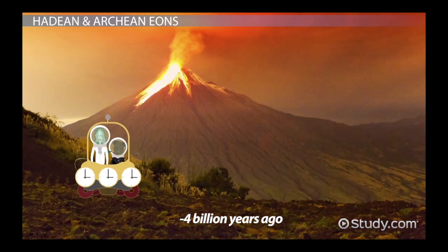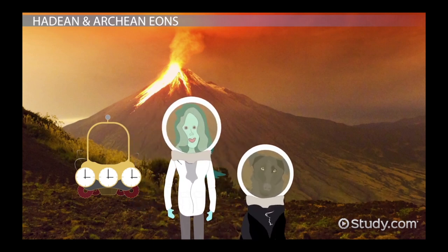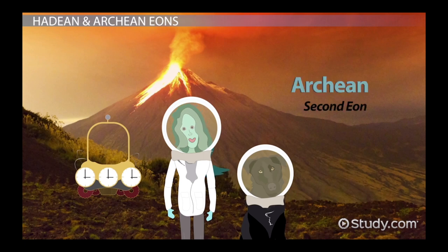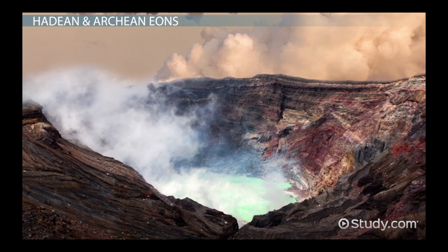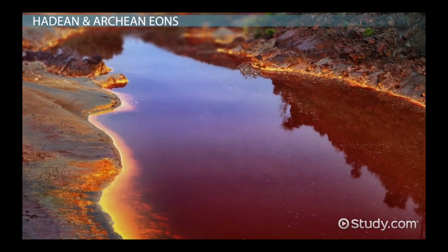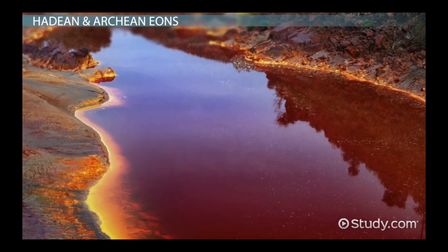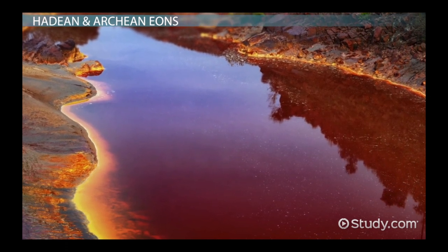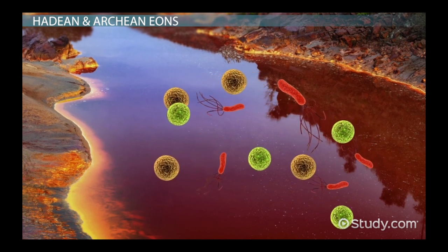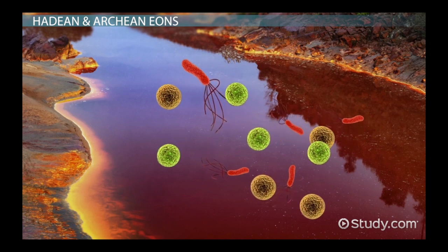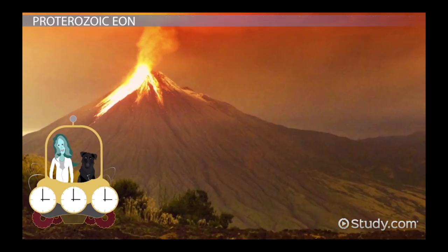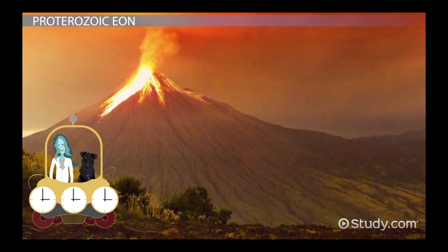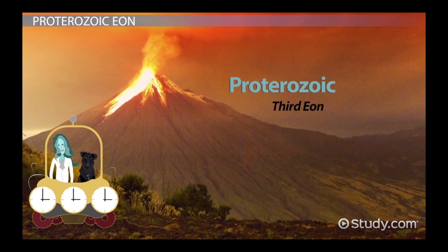We're now in the second eon, the Archean Eon, where the Earth cooled enough for continental plates and rocks to form, but had an atmosphere composed of gases toxic to most life forms of today. The Archean Eon started 4 billion years ago and ended 2.5 billion years ago. During this time, life came into existence, but the only life around was prokaryotic cells — single-celled organisms that do not have a membrane-bound nucleus or organelles, such as bacteria.